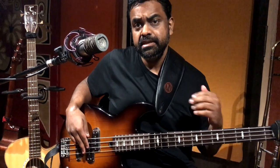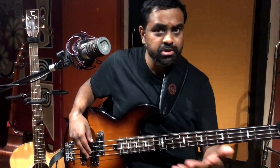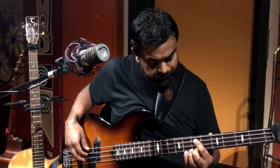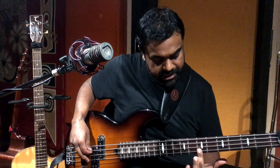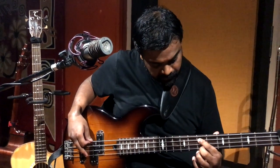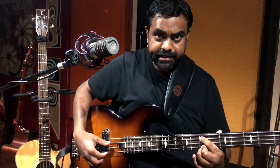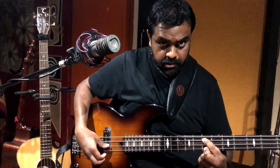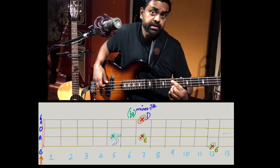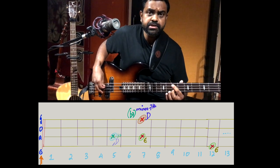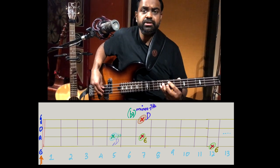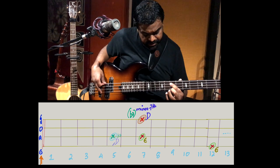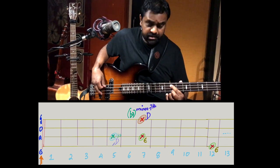Another very important interval on the bass, especially for building bluesy bass lines, funky bass lines, or R&B and soul bass lines, will be the flat seventh. The flat seven is exactly on the same fret as the root, but you skip a string and play it here. That'll be E, D, E, D. The flat seventh is also called a minor seventh or a dominant seventh.